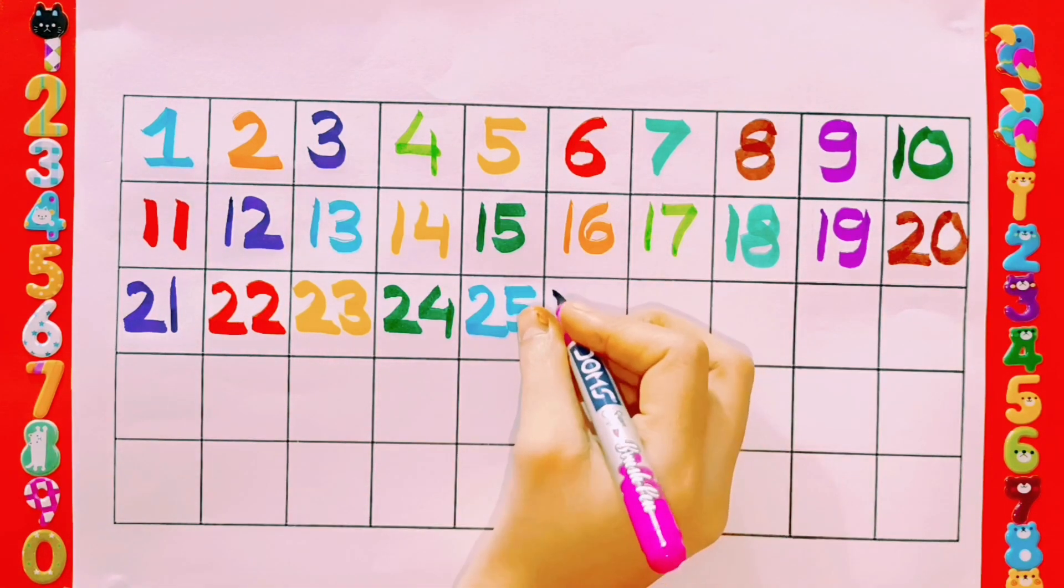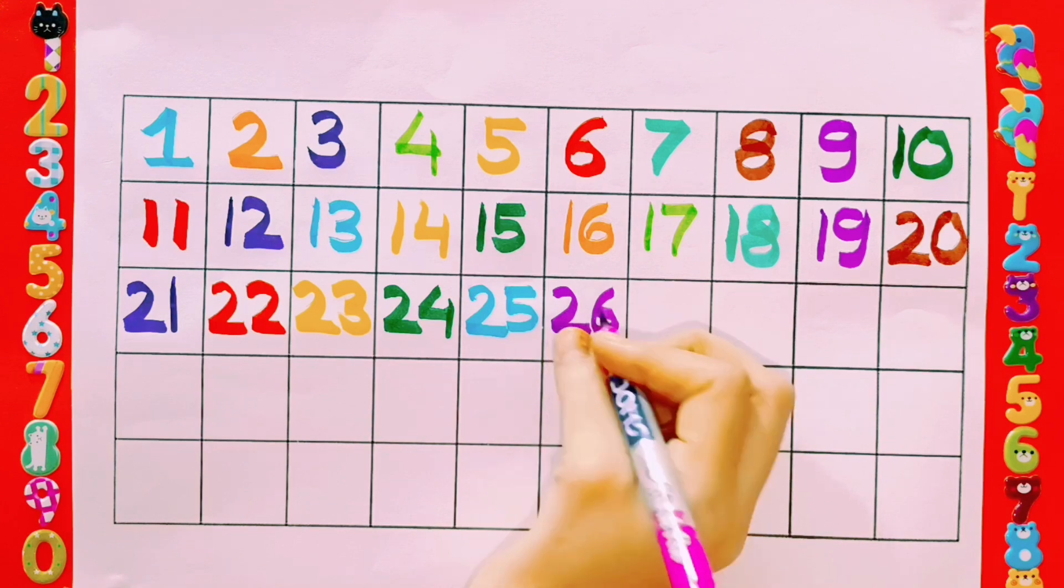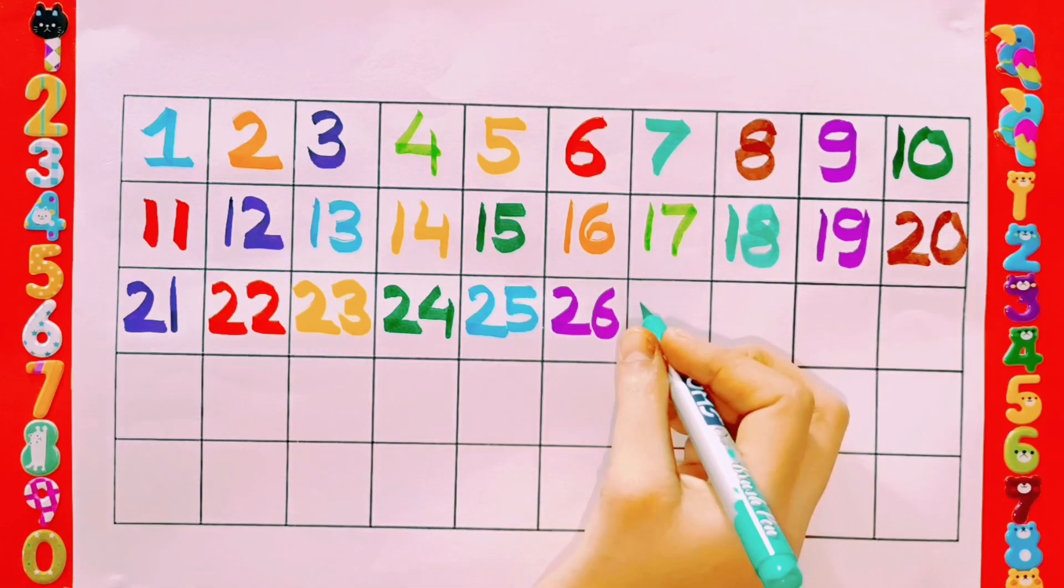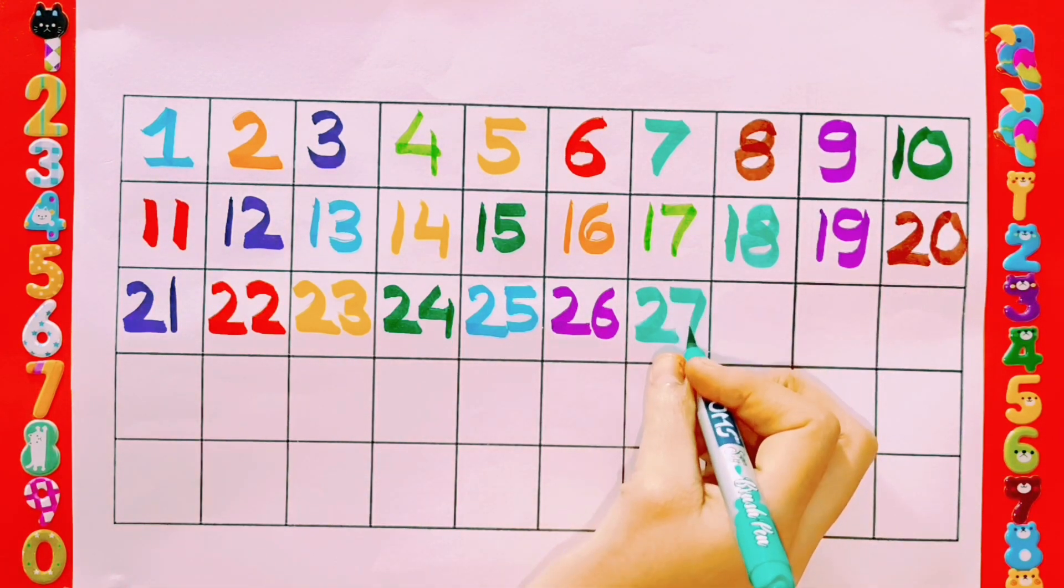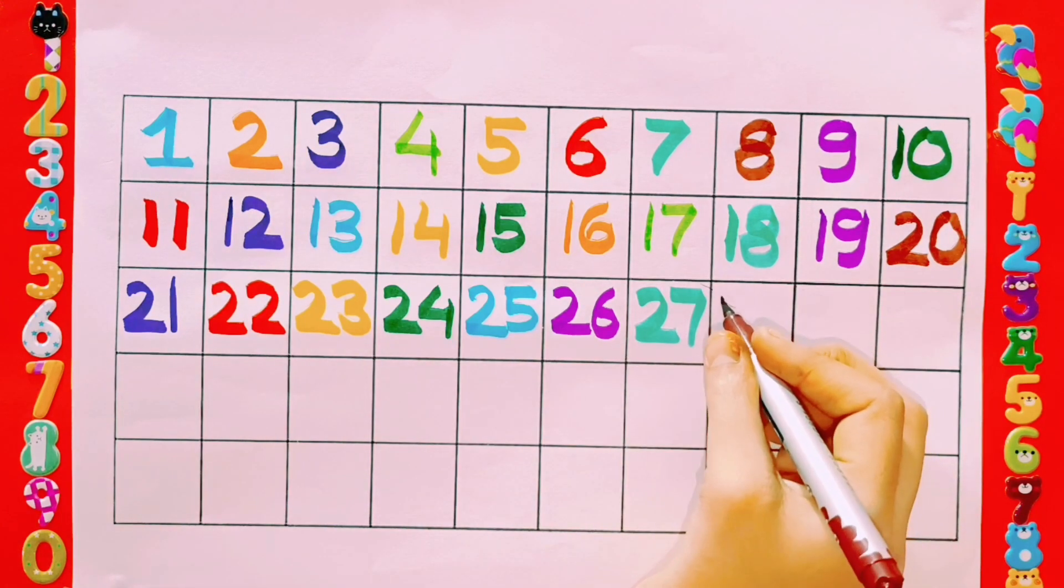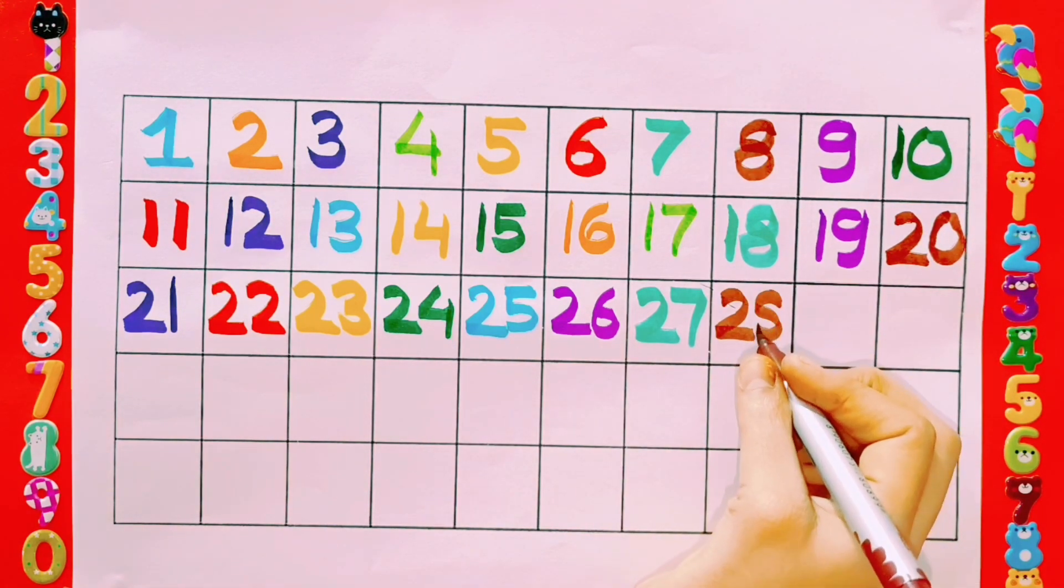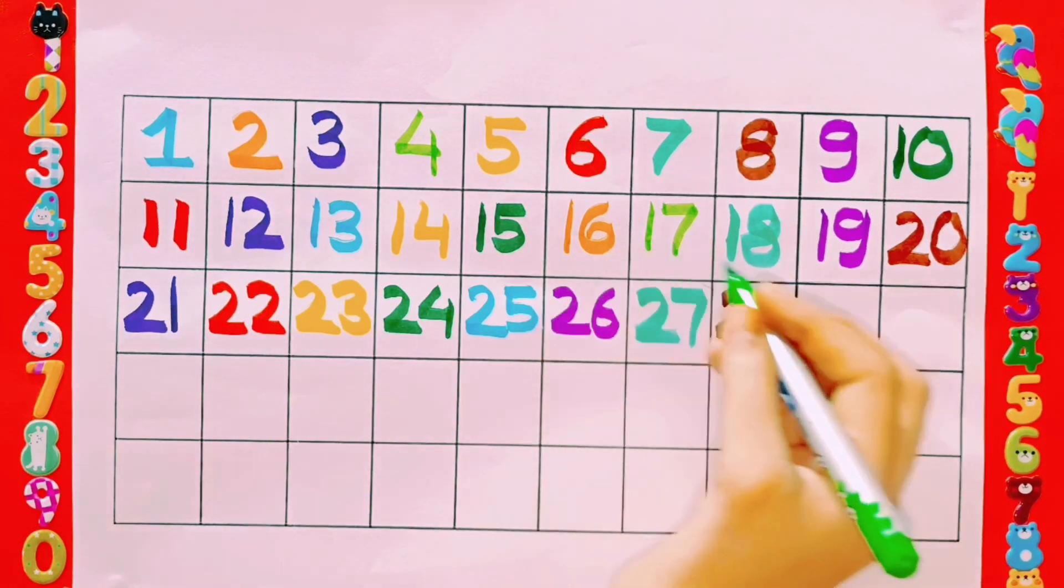25, 25, 26, 26, 26, 26, 27, 27, 27, 27, 28, 28, 28, 28, 29, 29.